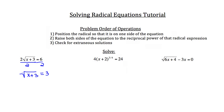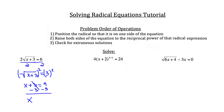Now we raise both sides to the reciprocal power of that radical expression. The left side was raised to the 1/2 power, so we square both sides. The square root and the square cancel out, leaving x plus 3 on the left equal to 3 squared, which is 9. We subtract 3 from both sides and get x equals 6. There are no extraneous solutions for this problem.